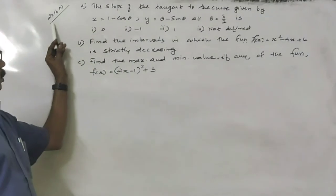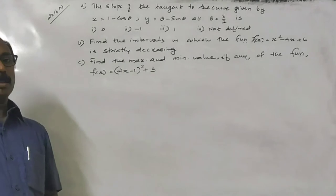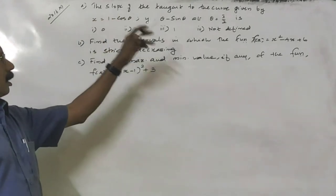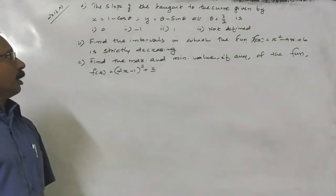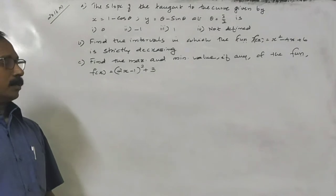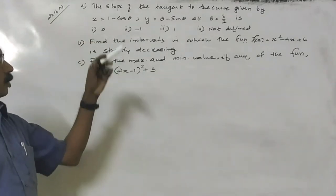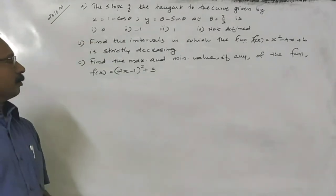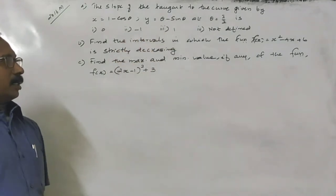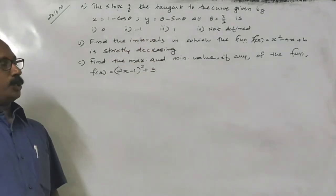Here, the question which was asked in 2016 March. The first question is: find the slope of the tangent to the curve given by x equal to 1 minus cosθ, y equal to θ minus sinθ, at θ equal to π/2.